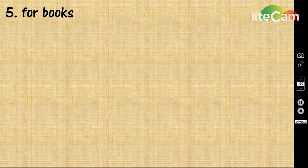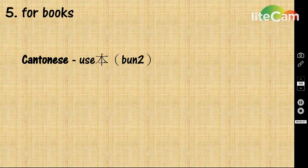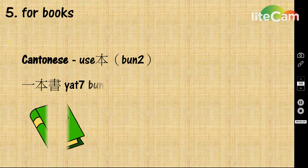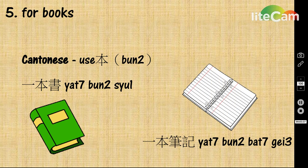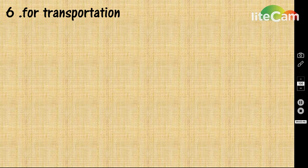For books, we normally use 本 as the quantifier. 一本書 means a book. 一本筆記 means a notebook.